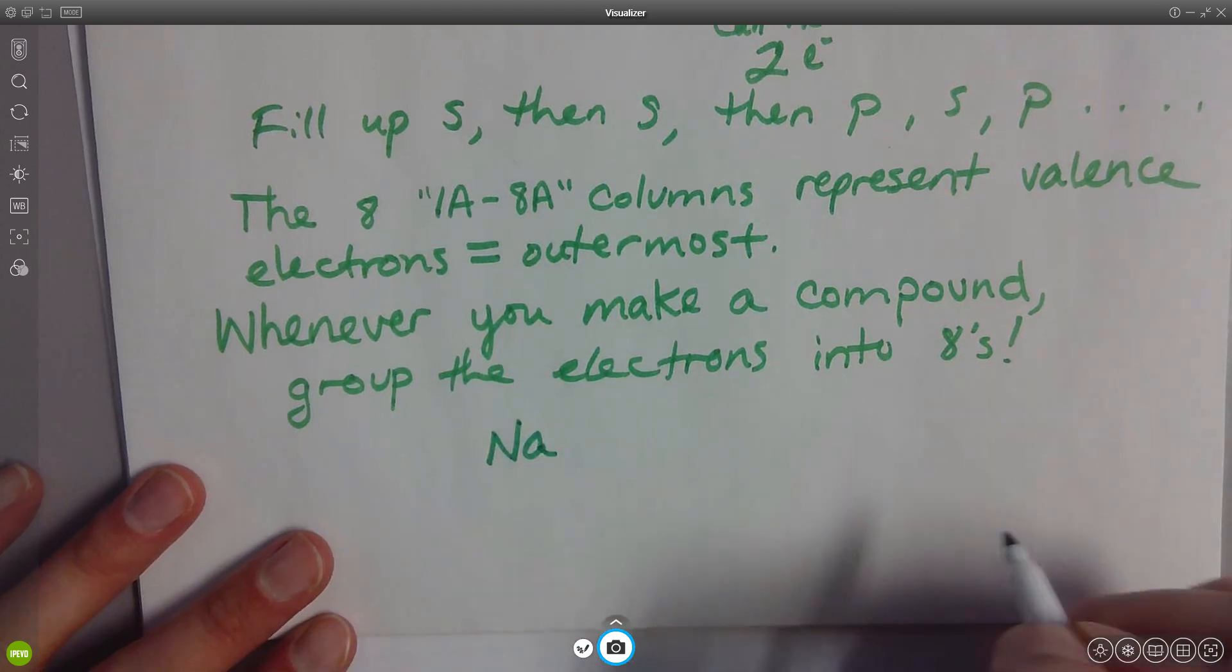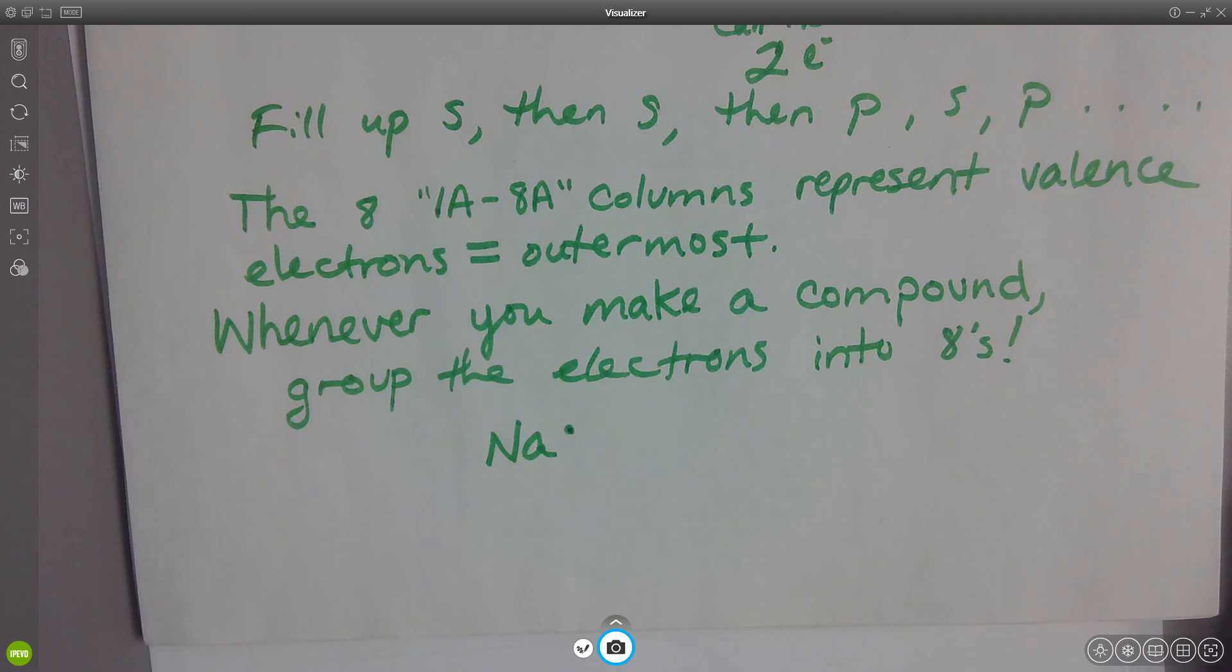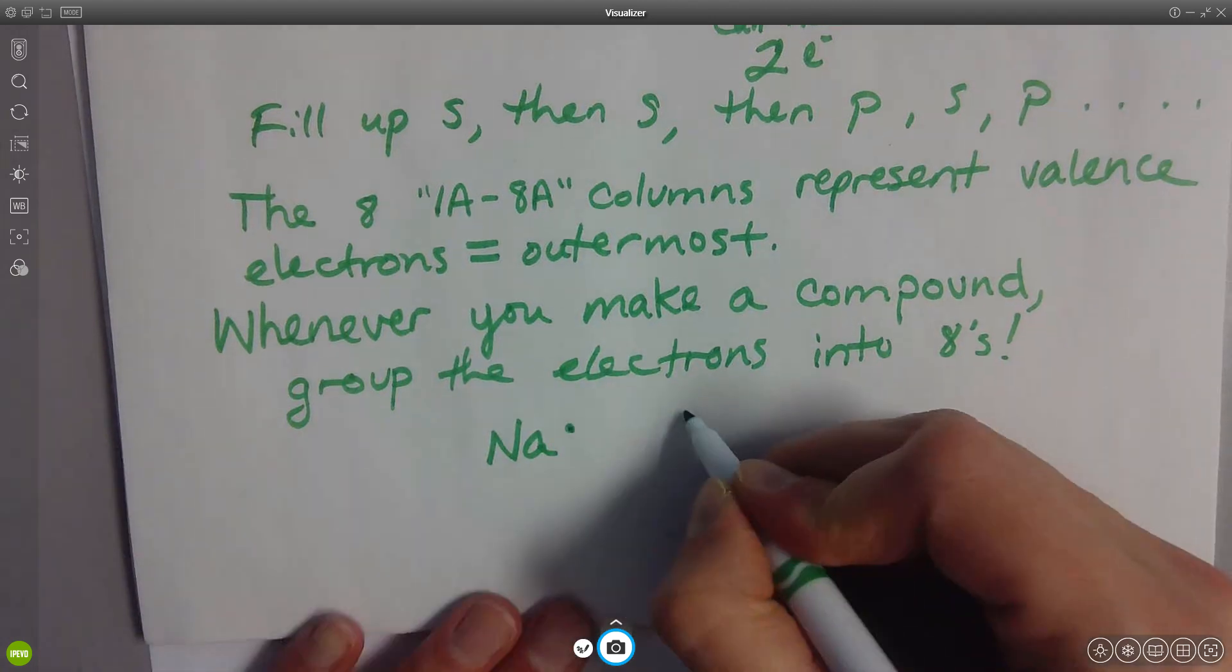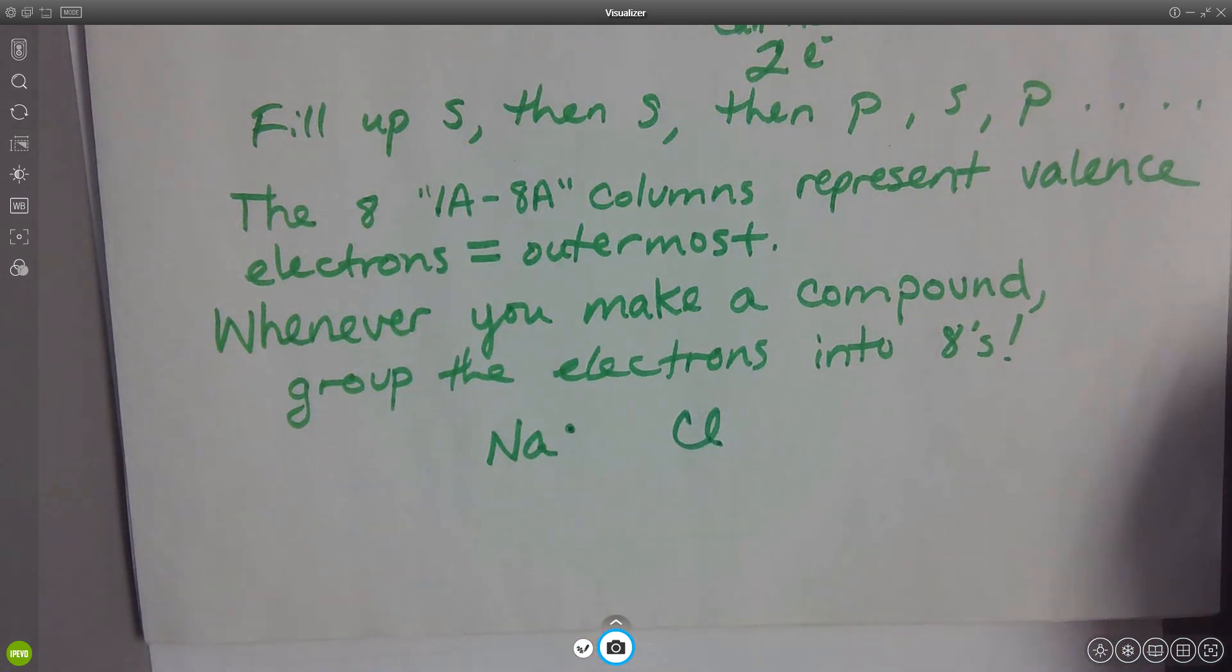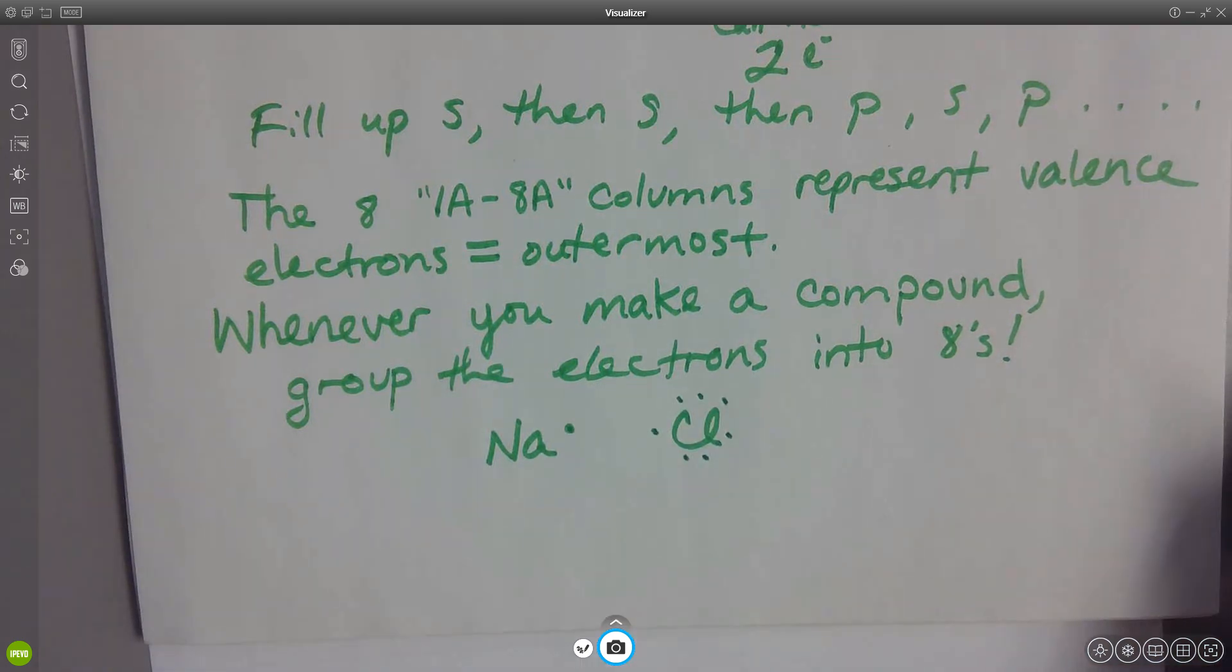Sodium. What column is sodium in? Look at your periodic table. What column is sodium in? One A. That means that sodium has one electron in its outermost level, in its valence shell we call it. How about chlorine? By the way, I know what time it is. We're getting close to the end here. I'm not losing track of time. How many electrons does chlorine have? What column is it in? Seven. So it has seven electrons. I'm going to draw them this way: one, two, three, four, five, six, seven.